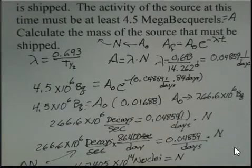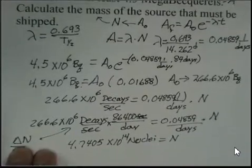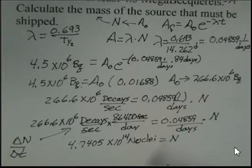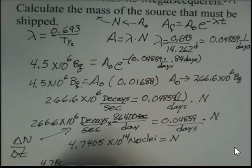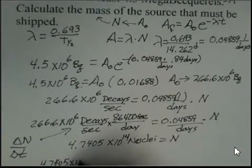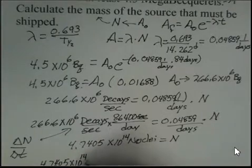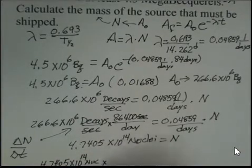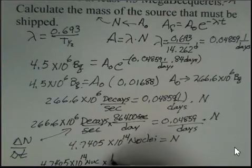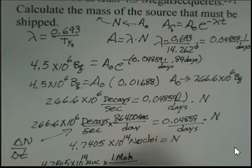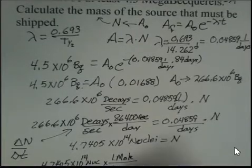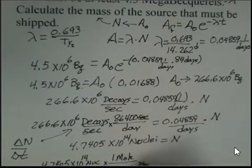Now that we have the number of nuclei, how do we find the mass in grams? Well, we can get to the number of moles by using Avogadro's number. So I'm going to go ahead and do a conversion. 4.7405 times 10 to the 14th nuclei multiplied by one mole of this isotope, 6.02 times 10 to the 23rd nuclei.